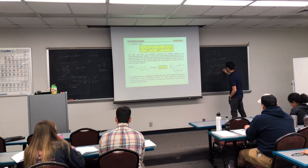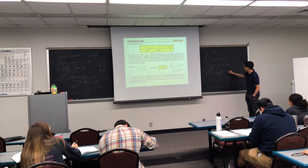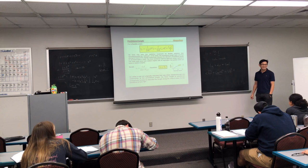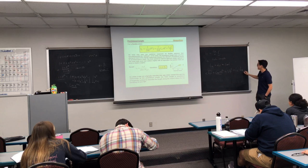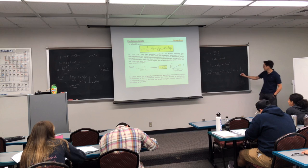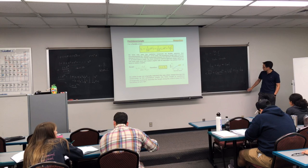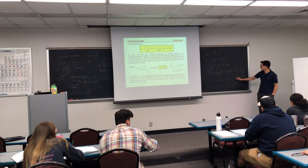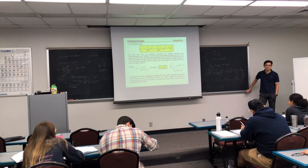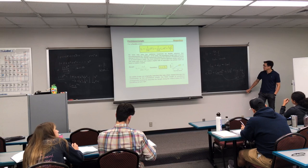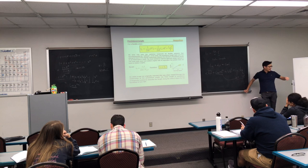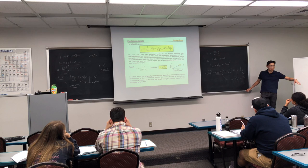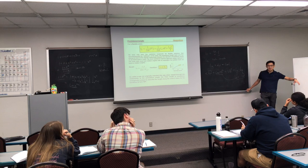There are now three ways to define end-to-end distance squared: first, C-infinity times N times l-squared (what we've used since day one); second, the equivalent free joint chain model; and third, contour length LC times Kuhn length LK. LC equals N times l; LK equals C-infinity times l. Different textbooks use different notations, but they all describe the same thing.